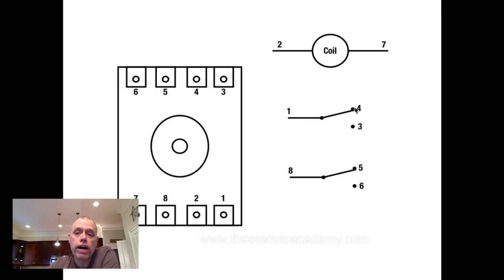I've got another set of contacts down here. I've got my 8, which is my common, and then my 8 to 6 would be my normally open, and 8 to 5 is normally closed, which makes it useful.